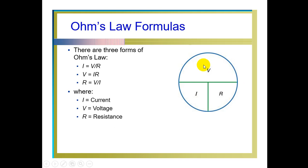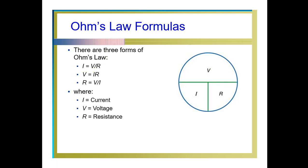Basically, this V indicates the voltage applied in Volts. This I indicates the current flowing through the resistive material. This R is the resistance of the material in Ohm. Generally, Ohm's law states that I is directly proportional to the applied voltage V.